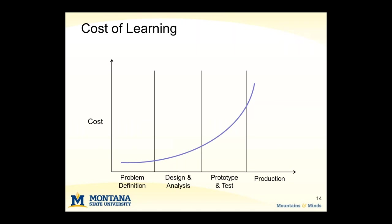The most expensive of all would be trying to look at a new idea when we're already in production, such as dealing with a production issue, yield issue, or warranty problem. Most would agree that the cost to look at a new alternative increases in a geometric fashion. A lot of folks would say each phase is sort of a tenfold increase in the cost of looking at a new idea or the cost of making a change.